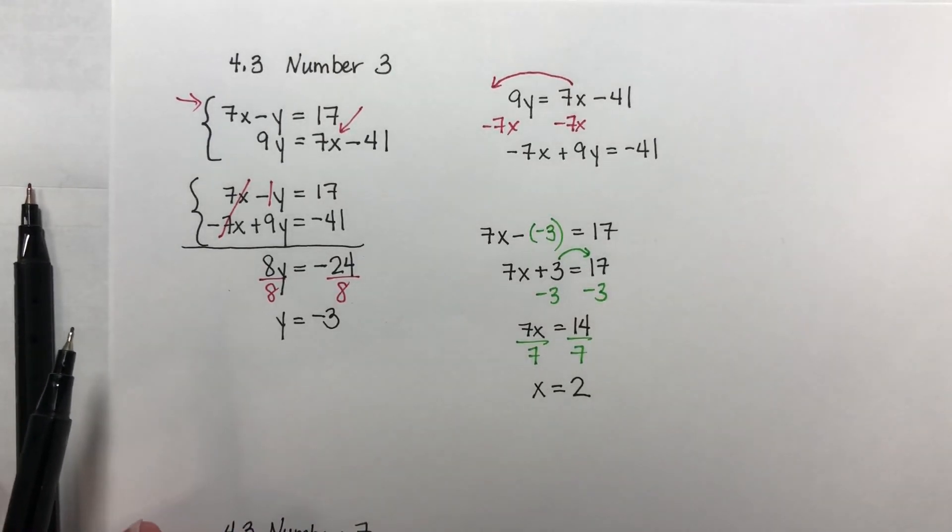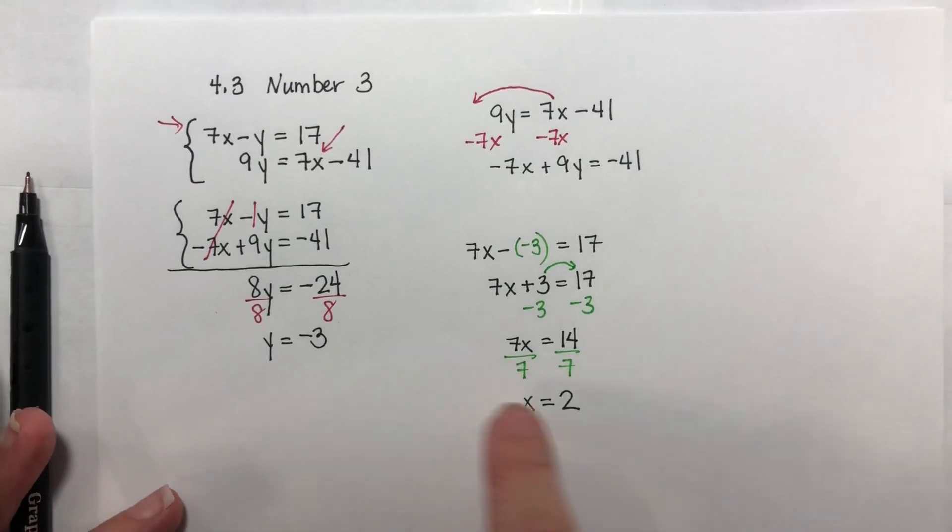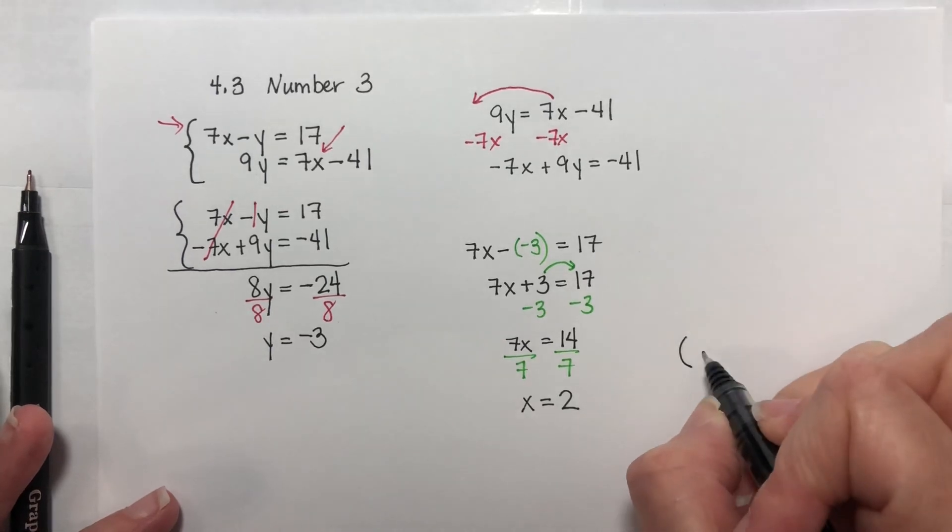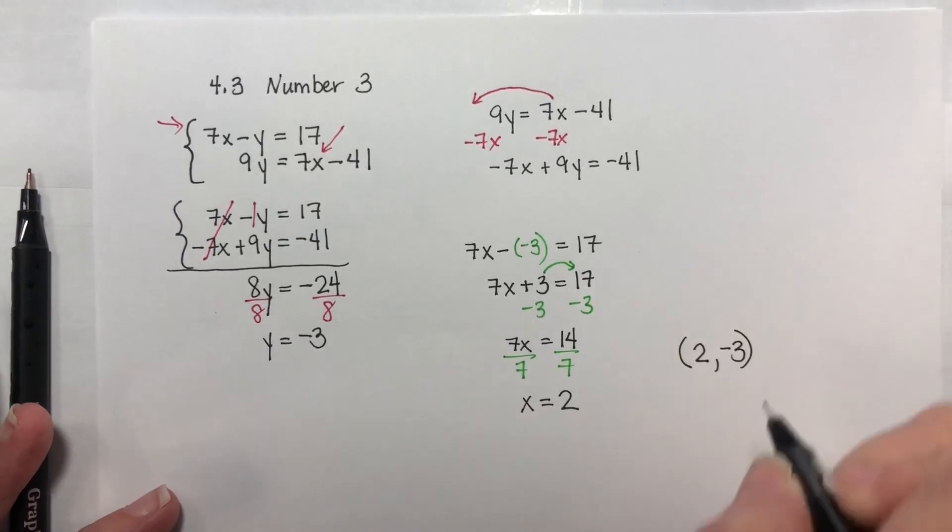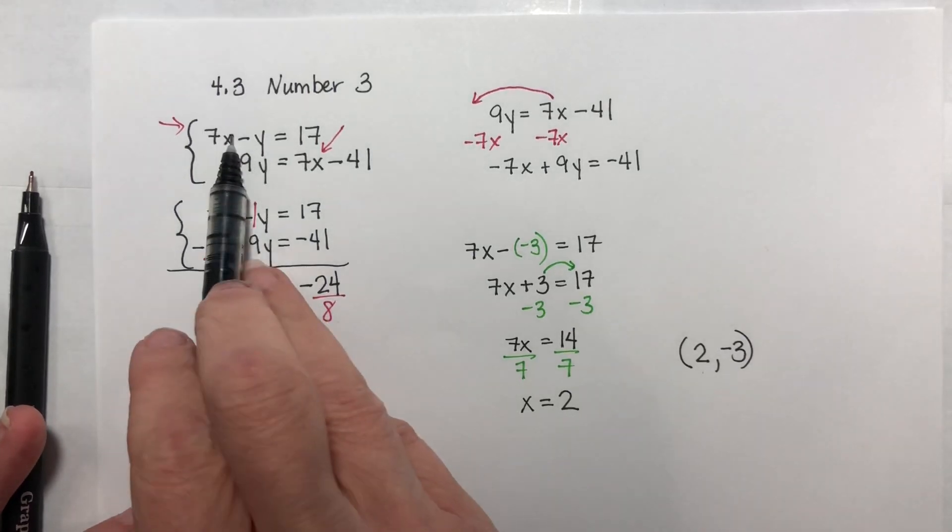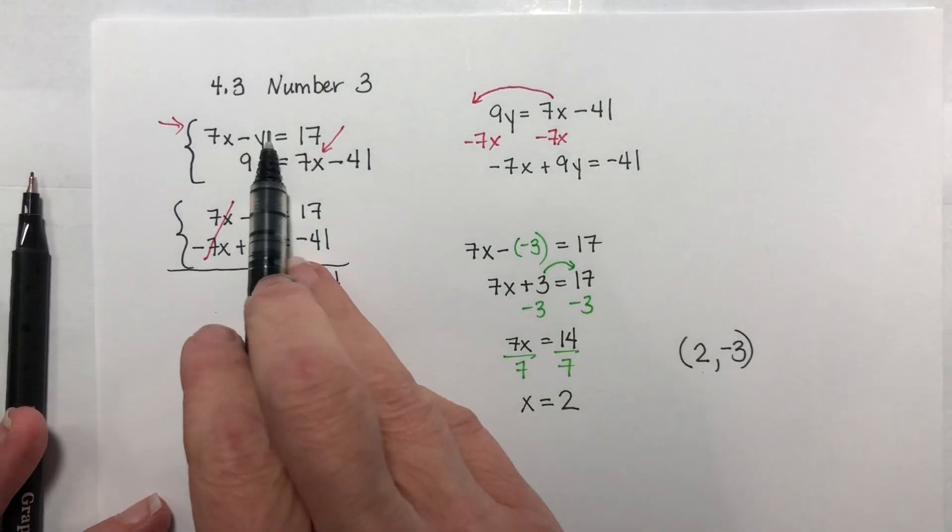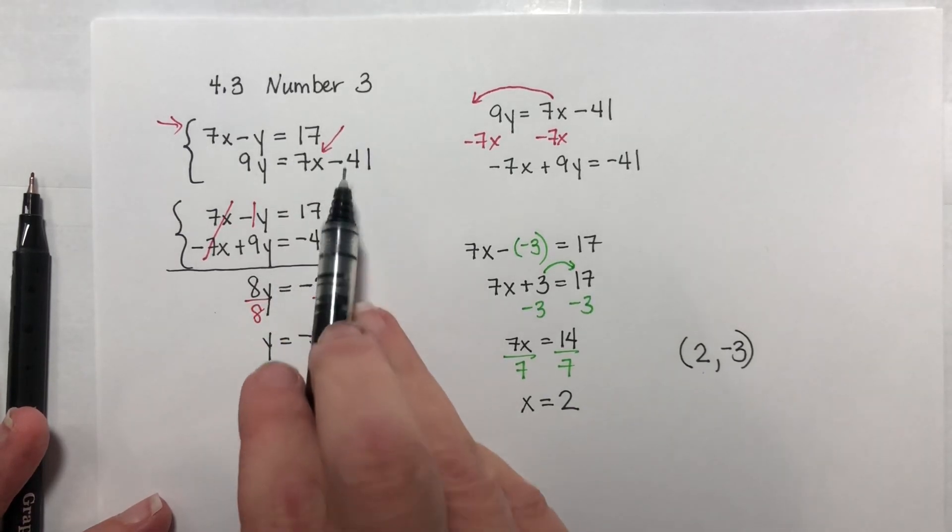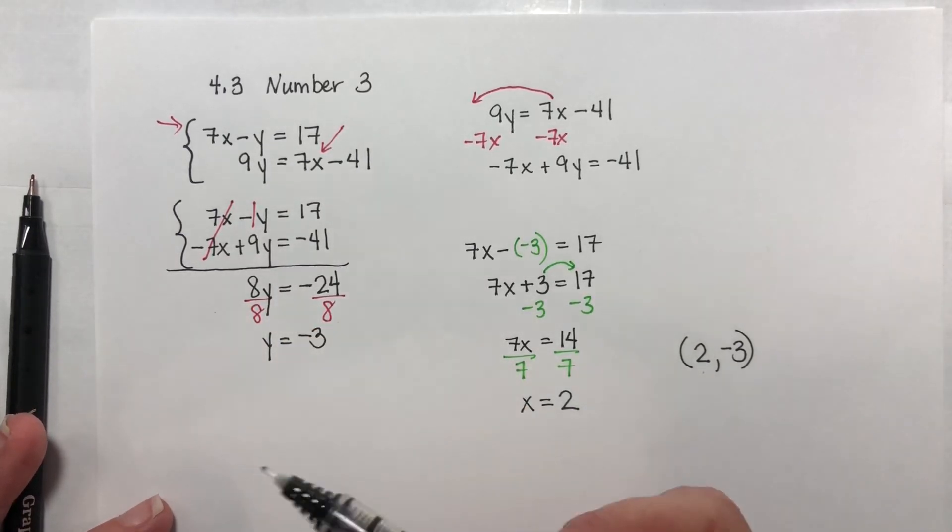So we found our x and we have our y. All we need now is to write our answer. Our answer is always the ordered pair, x, y. So the answer here would be the point 2, negative 3. And we are done. To check, I would take 2, plug it in for x, take negative 3, plug it into y. It needs to work in both equations. If it works in one and not the other, you made a mistake.